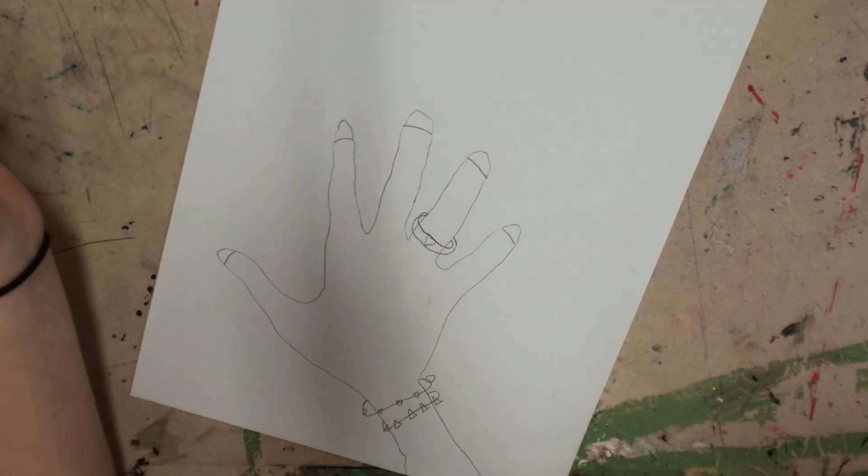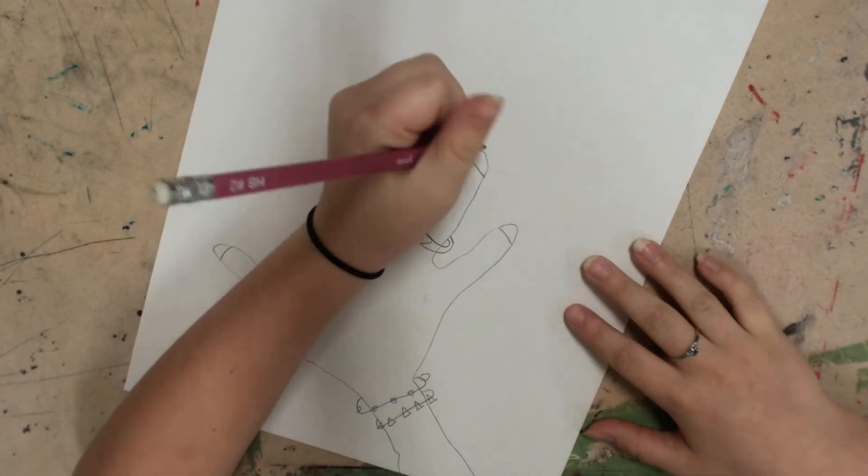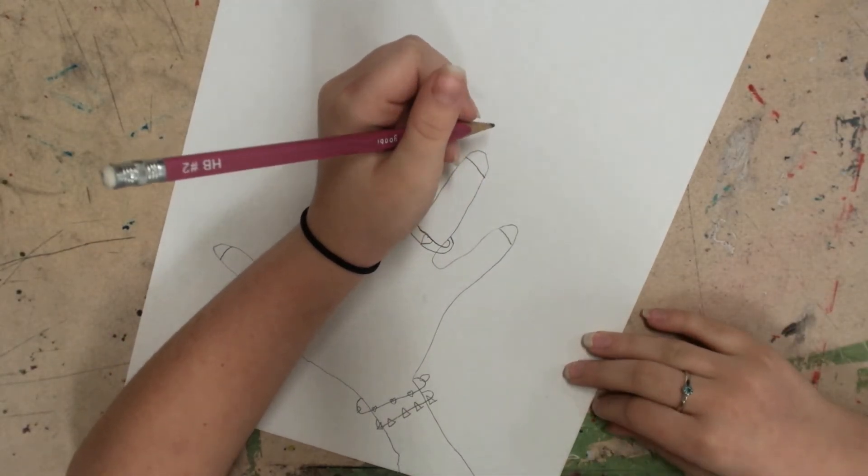And you can add a design on your ring finger, whatever design you want. A triangle, a heart, a square, whatever you want.